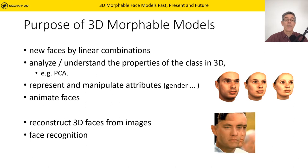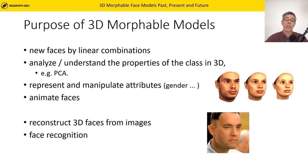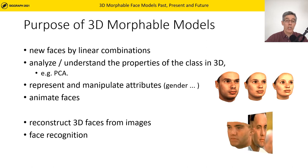We can use the morphable model to create new instances of faces, but we can also learn about the possible shapes of faces, manipulate specific attributes such as gender, animate faces in an example-based framework, reconstruct faces from single or multiple images, and do face recognition.